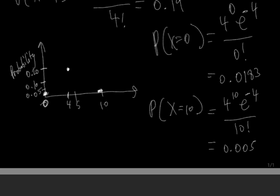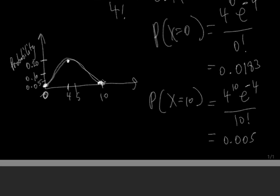This distribution looks something like a curve with the highest point at around 4 — the average — which you'd expect. If 4 people per hour enter a store, then the number of individuals with the highest probability is 4. When you move away from 4, whether way less or way above, the probability decreases. We can see that from this plot.